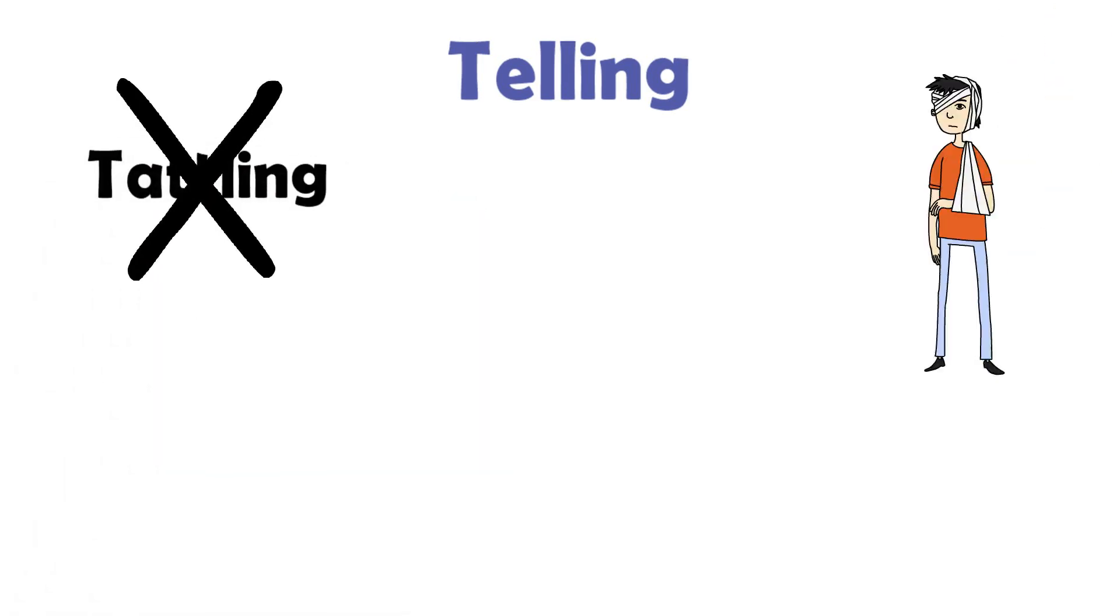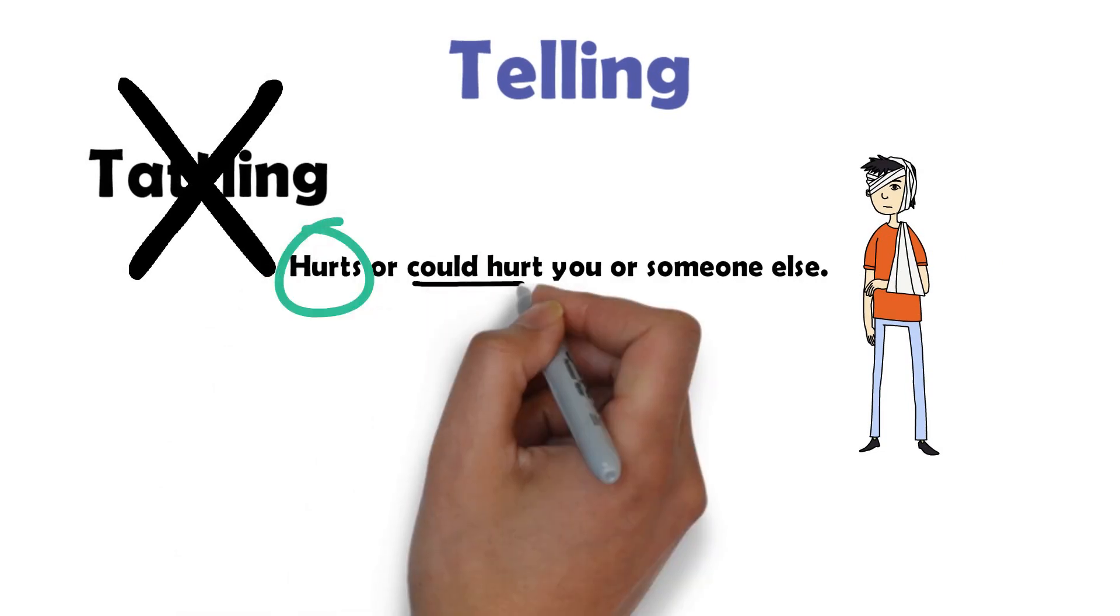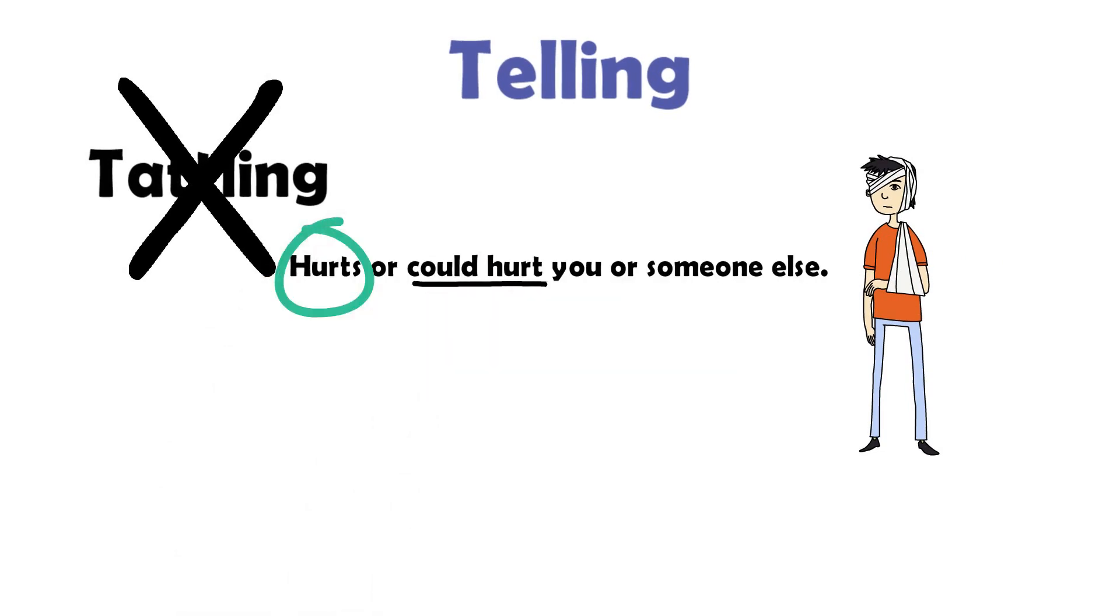Telling is a lot different than tattling. Telling an adult when something happens that hurts or could hurt you or someone else is very important. In these situations, it's necessary to bring attention to the problem going on so that an adult can help you and others.